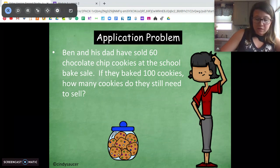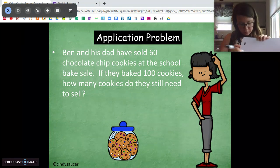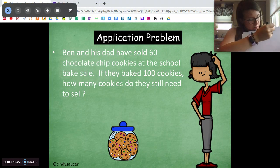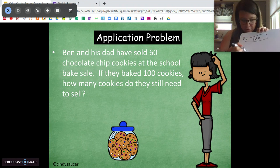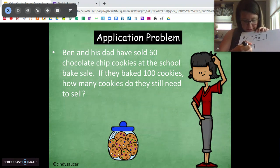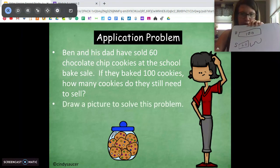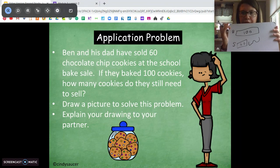So let's set up a tape diagram for that. So I have cookies baked. I'm going to put a B. Cookies sold. I'm going to put an S. So they baked 100 cookies, and they sold how many? 60. So we need to figure out this number here, right? Okay. Go ahead and solve.